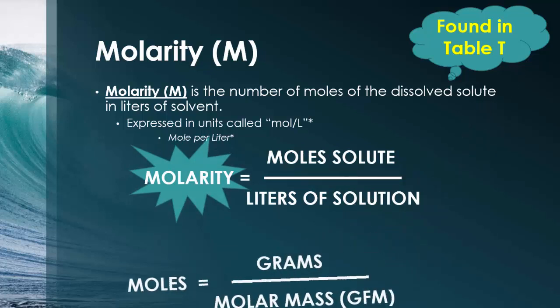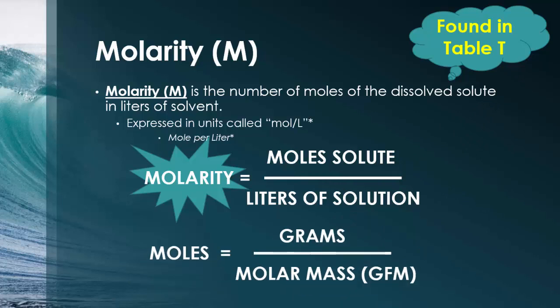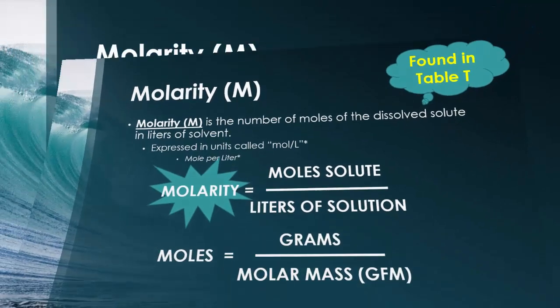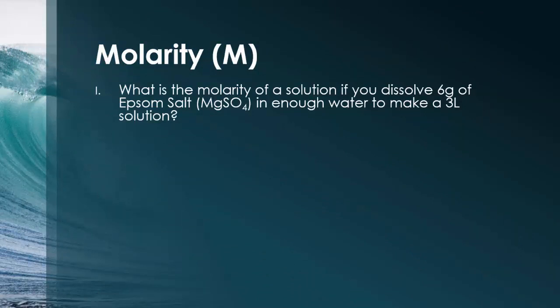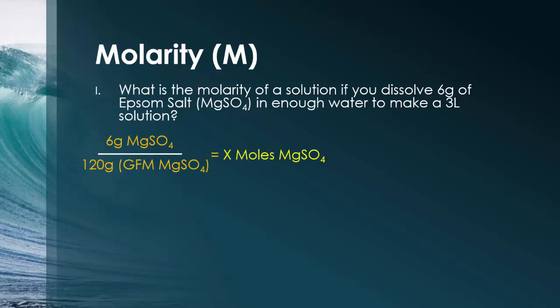And if you guys have forgotten, this is the formula for moles. Grams that are given to you in the question divided by the GFM or the molar mass of that substance. So, let's try an example question. What is the molarity of a solution if you dissolve 6 grams of Epsom salt, which is MgSO4, in enough water to make a 3 liter solution? Alright. So, the very first thing you have to do is take your 6 grams of Epsom salts, because that's what's given to you, and you divide it by the molar mass of it. So, that's 6 divided by 120, and you should notice that you get 0.05 moles of MgSO4. Now, remember, we had to find moles first because in the formula for molarity, we need moles divided by liters of solution. You can't take grams. You have to convert it into moles first.